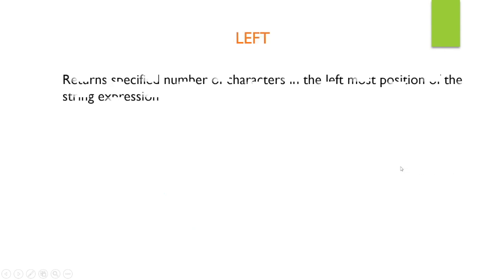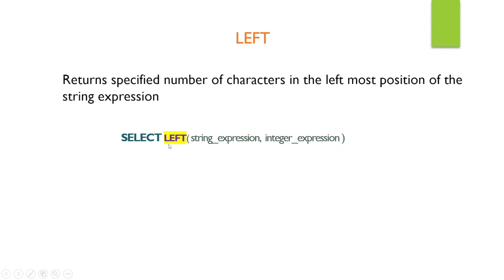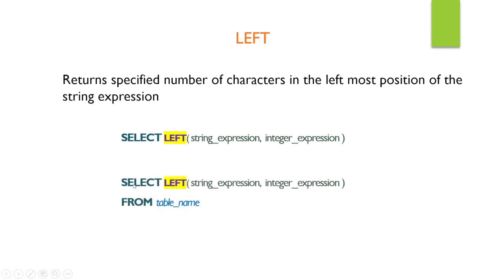Next is the LEFT function, which returns a specified number of characters from the leftmost position of a string expression. The syntax is SELECT LEFT with the string expression and an integer expression — it starts from the left and goes up to whatever integer you specify, returning that portion of the string. When using a column, you specify the column name, the integer expression, and the FROM table name.